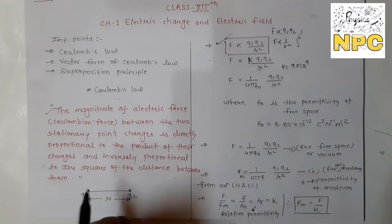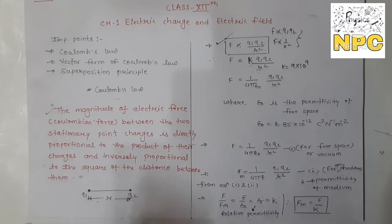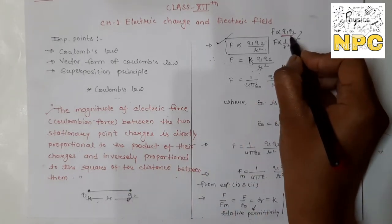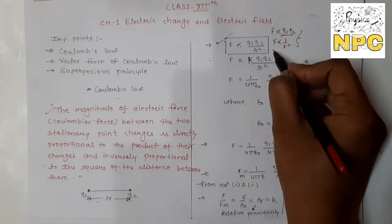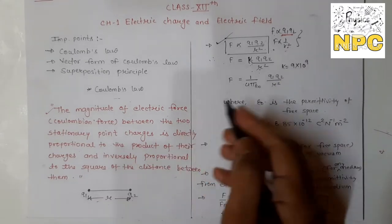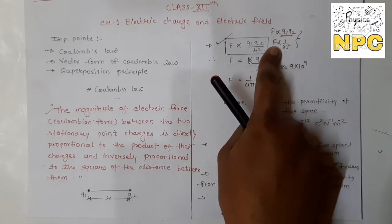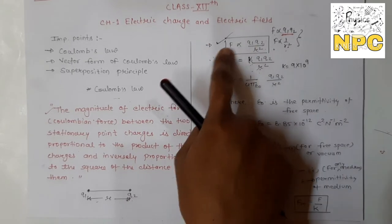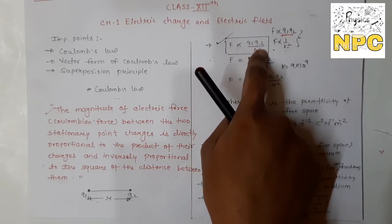We consider two charges Q1 and Q2 with a separation between them. According to Coulomb's law, the force is proportional to the product of their charges Q1 and Q2, and the force is inversely proportional to the square of the distance between them. If you combine these two statements, you get the combined equation: F is directly proportional to the product of charges and inversely proportional to the square of the distance between them.